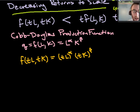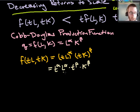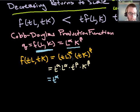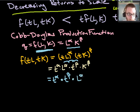And again we're going to assume that t is positive, greater than 1. Well what happens? First we want to distribute the exponents so we're going to get t^alpha times L^alpha times t^beta times K^beta. Now because these are all multiplied together we can take advantage of the commutative property of multiplication to reorder them. So now we've got t^alpha times t^beta times L^alpha times K^beta.